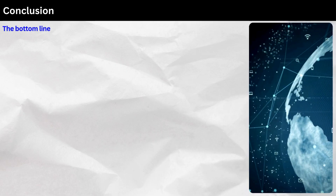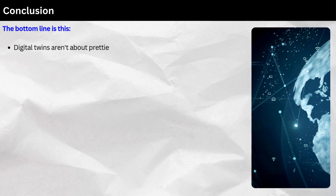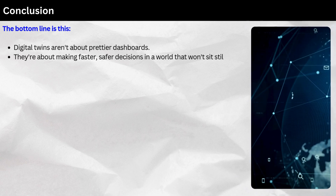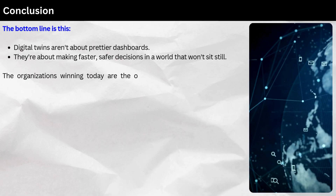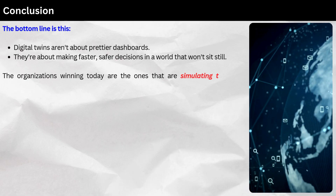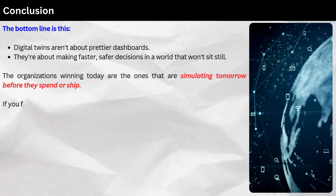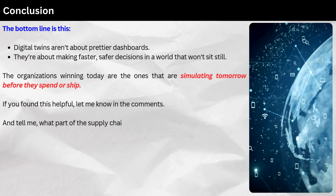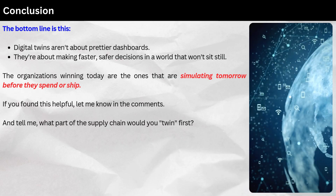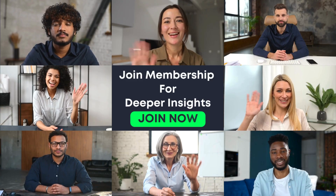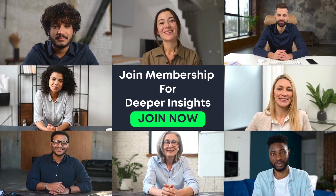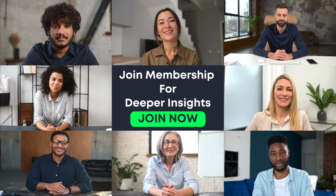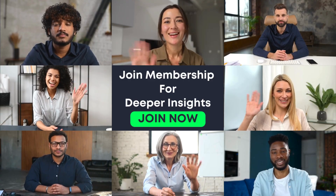The bottom line: digital twins aren't about prettier dashboards. They're about making faster, safer decisions in a world that won't sit still. The organizations winning today are the ones simulating tomorrow before they spend or ship. If you found this helpful, let me know in the comments — and tell me, what part of the supply chain would you twin first? Click the join button now and become part of the smartest supply chain community on YouTube. Don't forget to like, share, and subscribe. More real-world supply chain breakdowns coming your way.